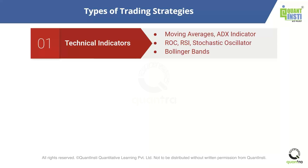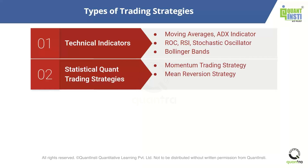So technical indicators are the first category. When you want to try something more, you want to create a mathematical model and have maths on your side — to test whether an idea actually works. That's when you move towards quant or statistical quant trading strategies.